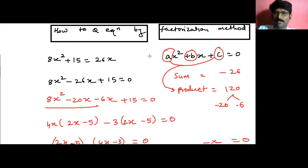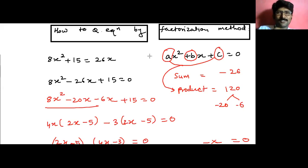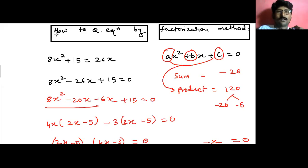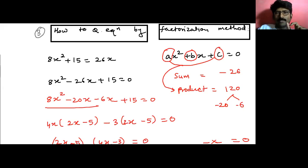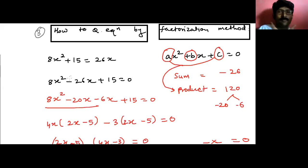By the way, we have already learned in the ninth standard how to split the middle terms of trinomials — this is just a continuation of that same process. Let's say this is the sum: 8x squared plus 15 equals 26x. Students, start writing — this is the third topic: how to solve a quadratic equation by the factorization method. Write this question: 8x squared plus 15 equals 26x.